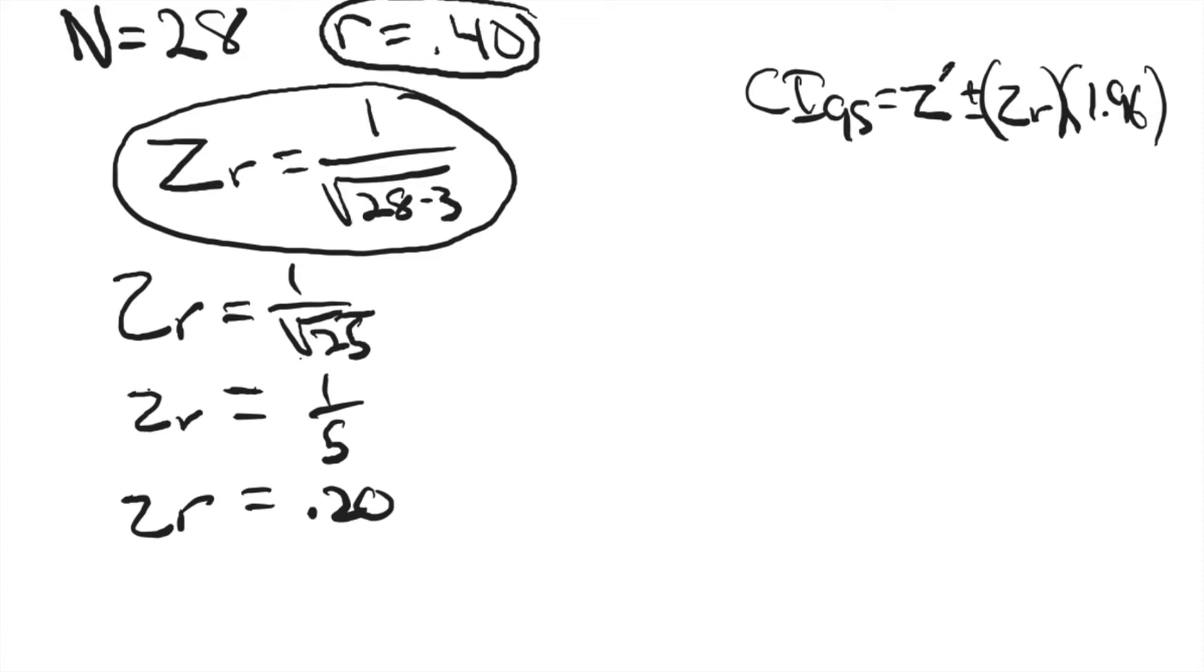Now we're ready to plug that into this formula. But first, we need to transform our correlation coefficient into a standardized number, this z prime. There's a couple of ways to do that.